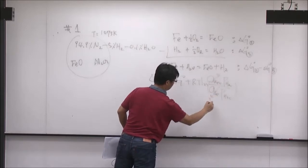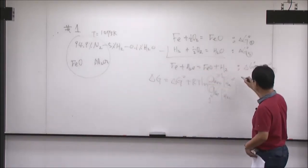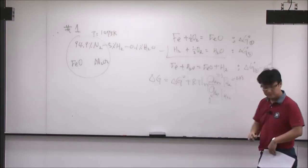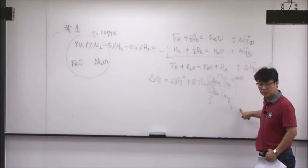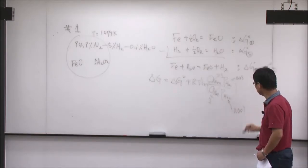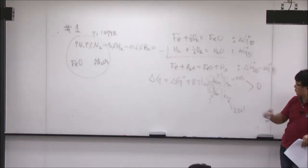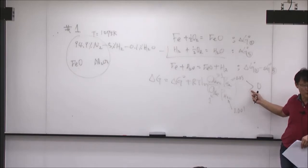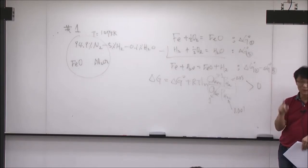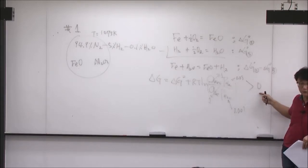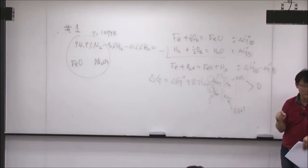If you calculate this, the result is positive. I saw a lot of students somehow get the wrong answer and say it's negative. I tried to figure out what mistake was made but could not understand. Somehow a mistake was made in the final calculation, and the answer given was negative instead of positive — saying FeO is forming. That's obviously wrong. It forms iron, because delta G is positive. You do the same thing for each one of these reactions.